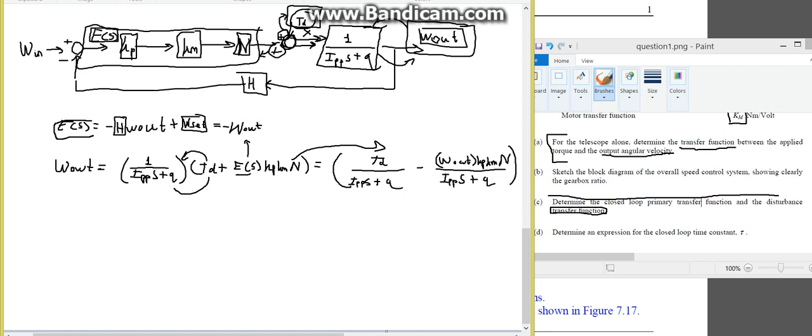Remember, the reason why there's a minus here and the reason why I've put emphasis on the WL is because ES, your error signal here, equals the inverse, sorry, equals the difference of your angular velocity output.